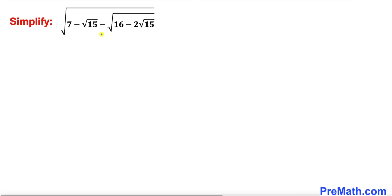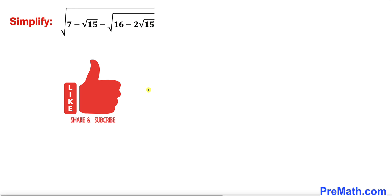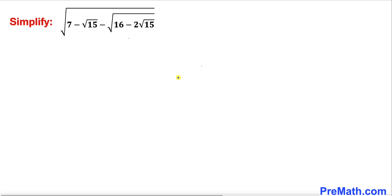Welcome to pre-math. In this video we are going to simplify the given radical expression: 7 minus the square root of 15 minus the square root of 16 minus 2 times the square root of 15. Let's go ahead and get started. As you can see, we are dealing with so many radicals, so we are going to go from inside out.